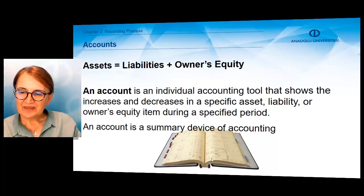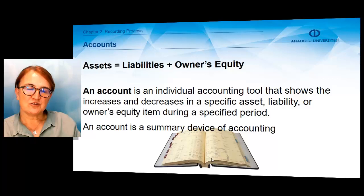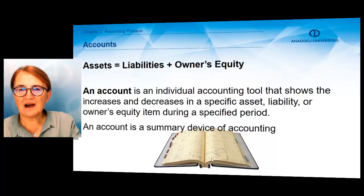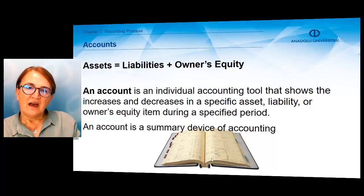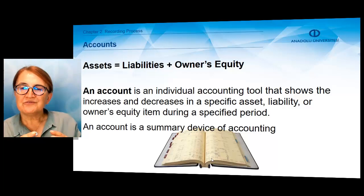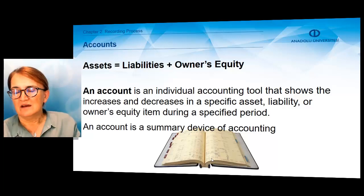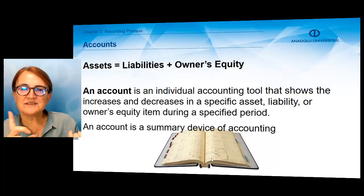So, it is in a manual system. How can we record any events? Remember the basic accounting equation: assets will always equal liabilities and owner's equity. There will be different types of asset items, different types of liabilities, and owner's equity. To follow the changes on each specific asset, liability, or owner's equity item, we'll need a tool. That tool is Account.